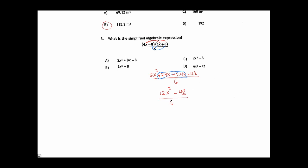Now I need to distribute my division. I'm dividing the top by the bottom. Everything on top gets divided by 6. I'm distributing the 6 into the 12x squared and into the negative 48. 12 divided by 6 is 2x squared. Minus 48 divided by 6 is minus 8. The answer is 2x squared minus 8, C.